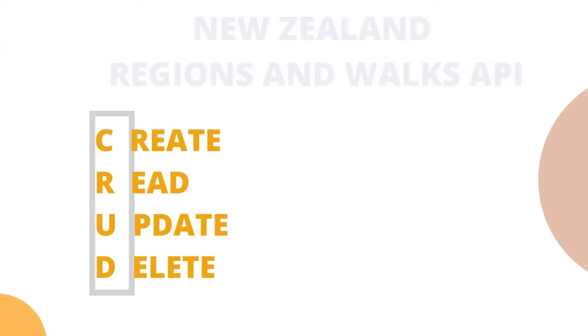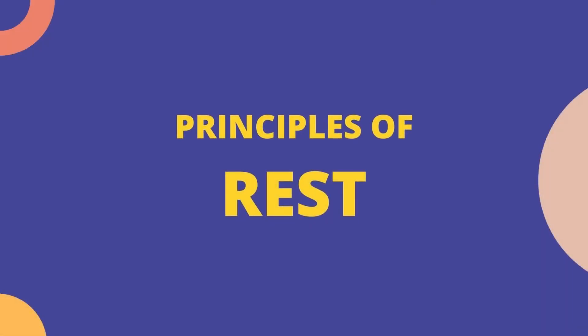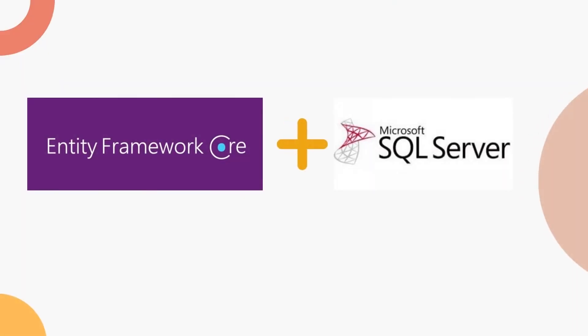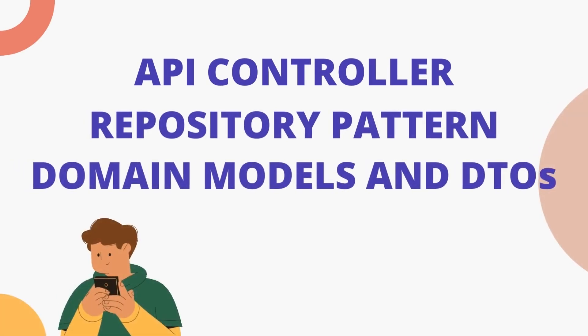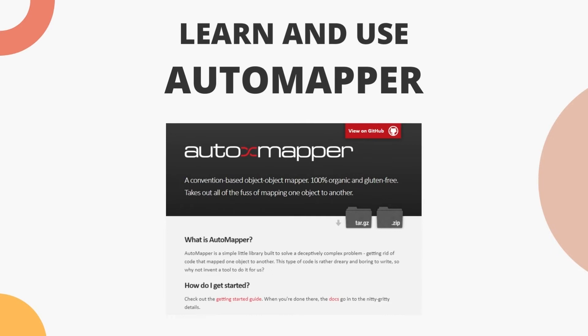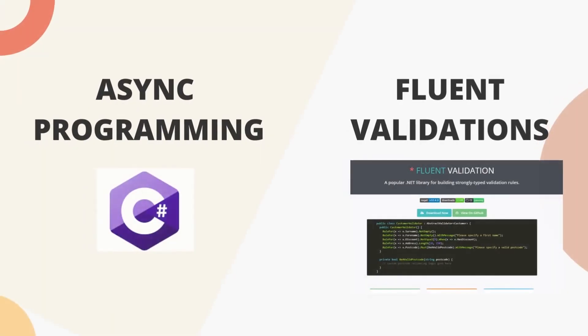We will start the course by understanding the principles of REST, creating and understanding a new web API project. We will learn and use Entity Framework to talk to our SQL Server database, then create our API controllers and understand the concept of domain models and DTOs. We will use the conventional style of mapping between domain models and DTOs and also use AutoMapper, along with learning asynchronous programming.